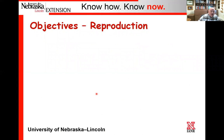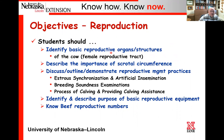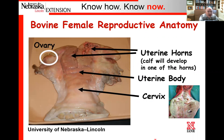On the reproductive side, our objectives say students should be able to identify some basic reproductive organs and structures, primarily focusing on the female side—specifically the non-pregnant female tract. They ought to describe the importance of scrotal circumference, discuss reproductive management practices related to estrus synchronization and artificial insemination, talk about a breeding soundness examination, the process of calving, calving assistance, reproductive equipment identification, and basic reproductive numbers like estrus cycle length and gestation period.